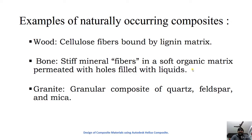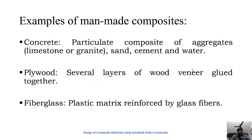Granite is also an example of a naturally occurring composite material. Coming to man-made composite materials, one of the most important is concrete, where limestone, sand, cement, and water are combined together to form concrete.